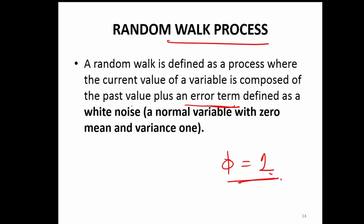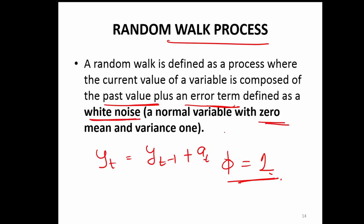There are two important things in a random walk series: you have the past value term and the error term, nothing more than that. So yt, the current value, is just the past value plus an error term at. This error term is typically also known as white noise, where you have zero mean and variance of 1.